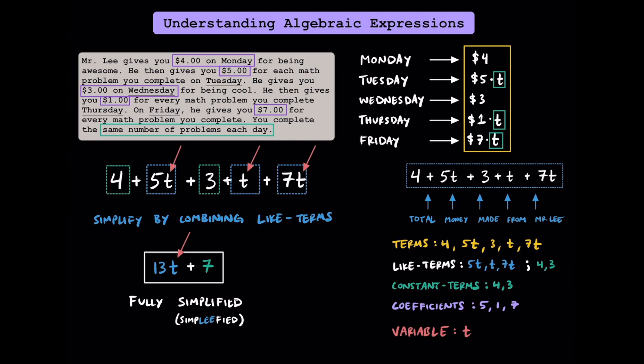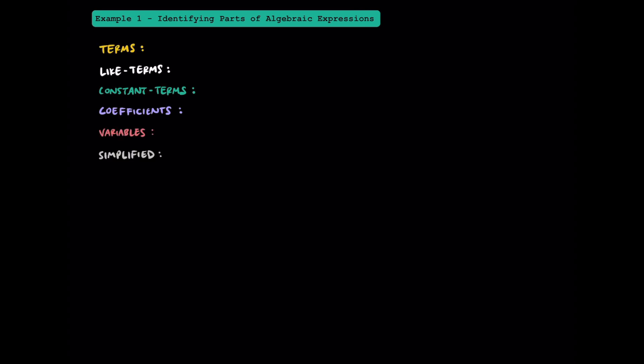Feel free to grab some paper and something to write with, and let's do some math together. Here in example 1, let's practice identifying parts of algebraic expressions. For each of the following expressions, we're going to find the terms, like terms, constant terms, coefficients, variables, and the simplified version of the expression. Let's look at this expression of 4x plus 7 plus 2x plus 12.